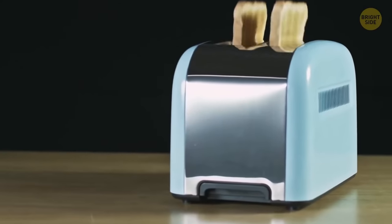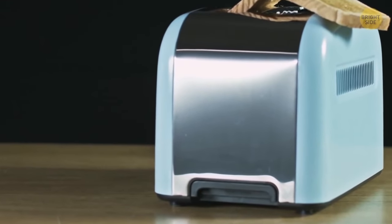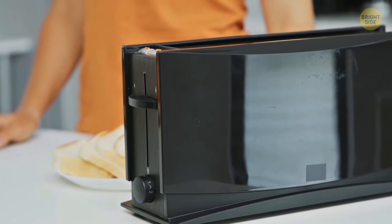Toasters have a secret slide in the bottom that can be removed so you can clean out all those annoying breadcrumbs.